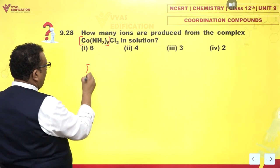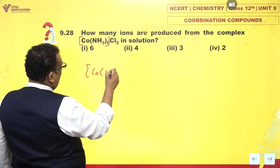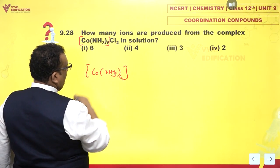So within the coordination sphere, you have all the 6 ammonia molecules.